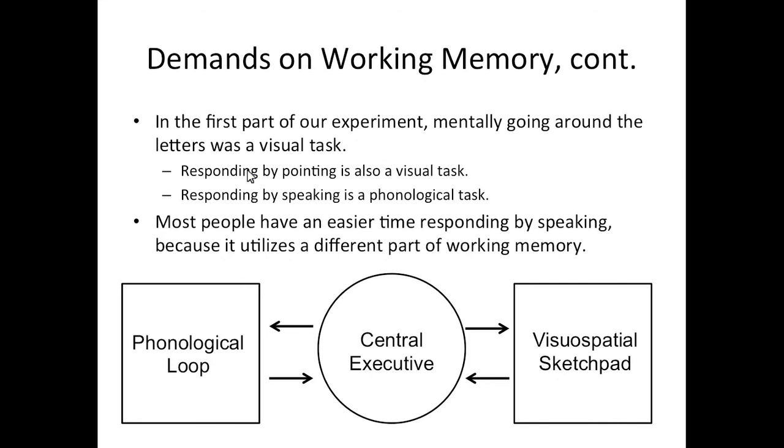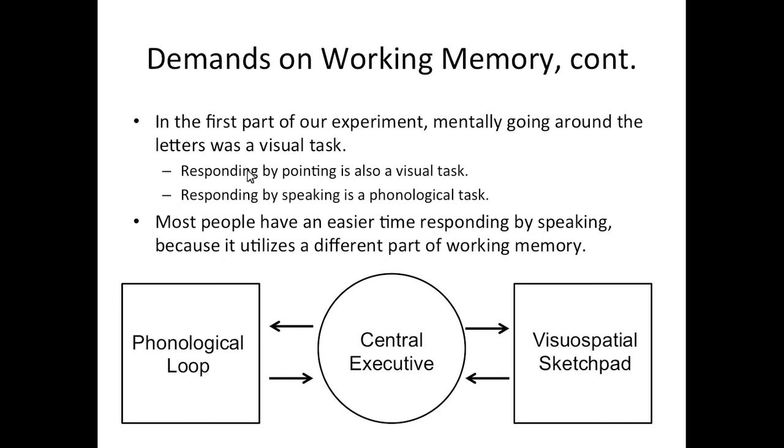So the various tasks in this experiment required you to either perform one task each or two tasks simultaneously. So in the first part of our experiment, mentally going around the letters is a visual task. Responding by pointing is also a visual task. Responding by speaking is a phonological task. So you should have had an easier time responding by speaking than pointing because they're separate systems. In the second part of the experiment, holding a sentence in memory is a phonological task because you're repeating it to yourself. So responding by speaking is a phonological task and responding by pointing is a visual task. So you should have an easier time in the pointing part of this experiment because it's a different part of working memory.